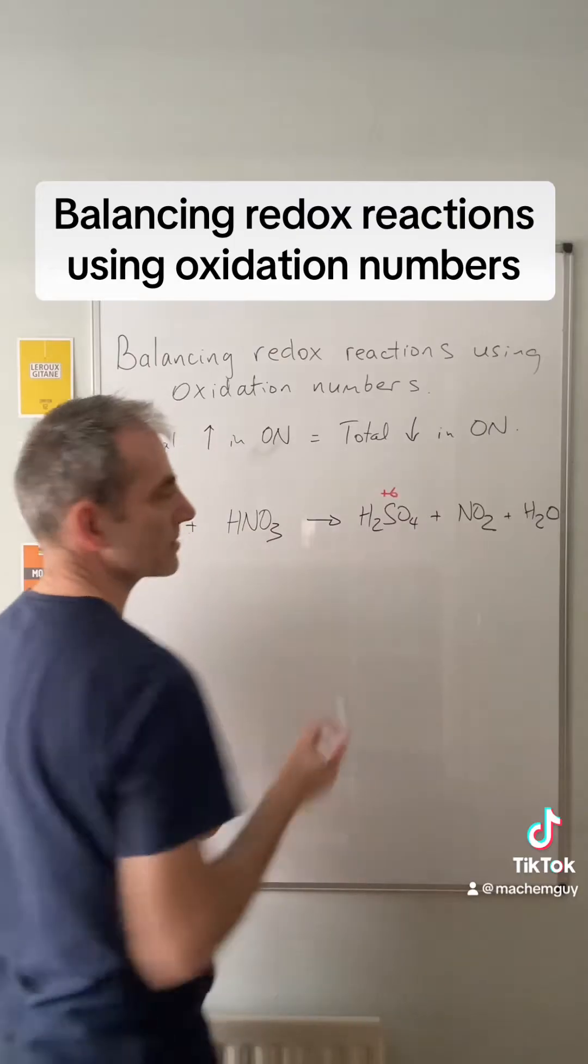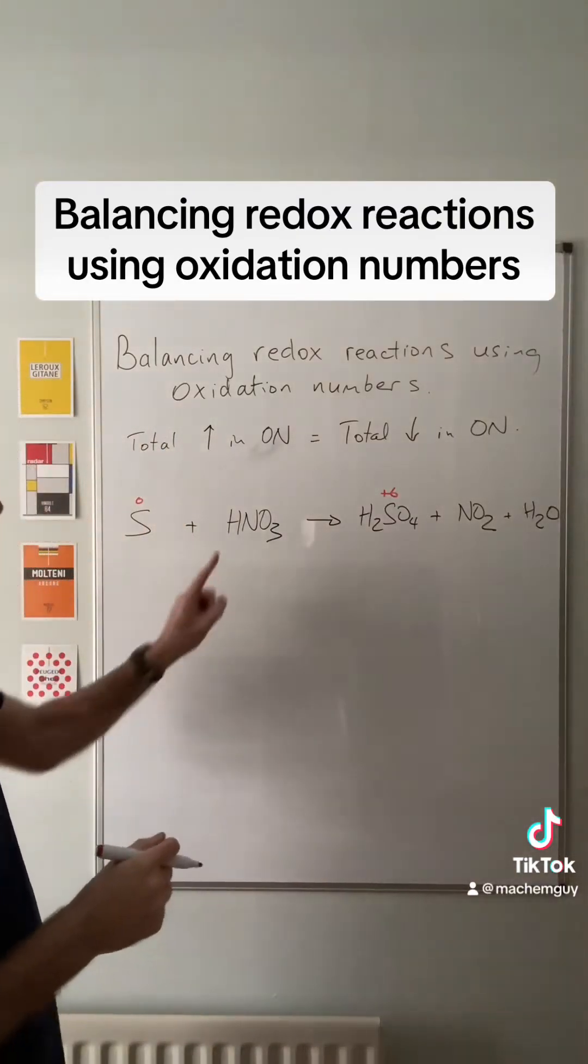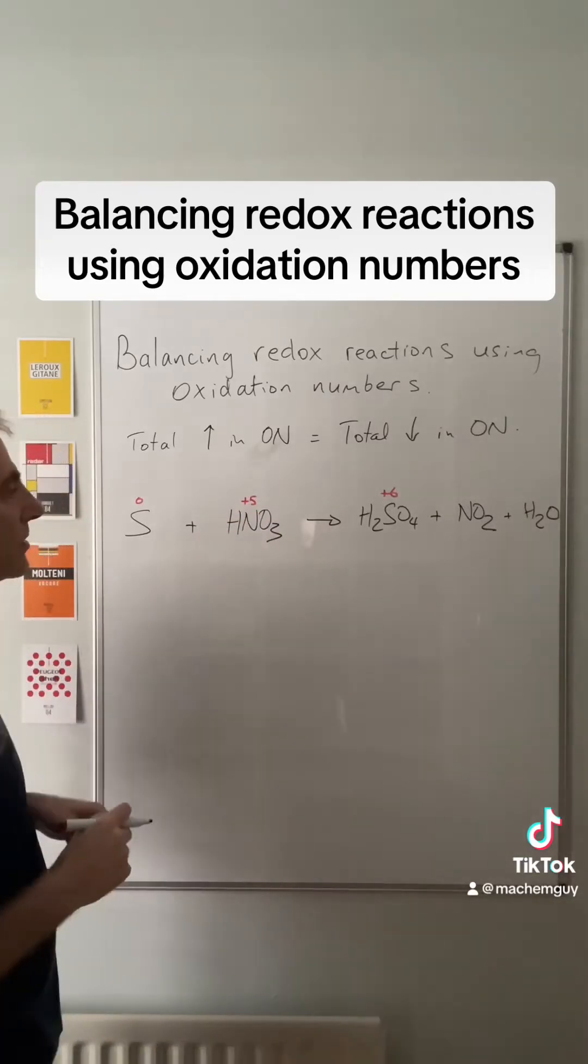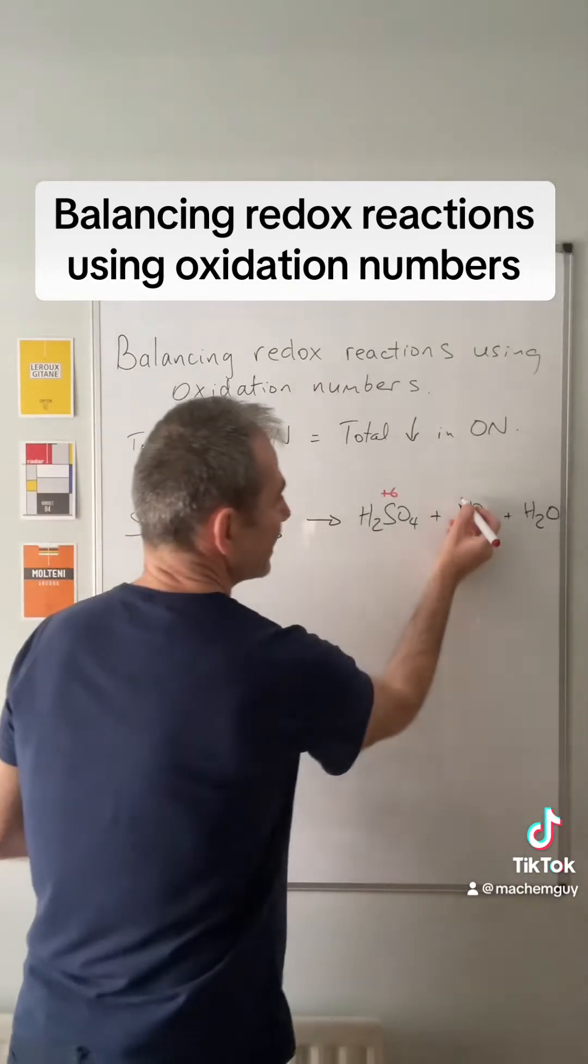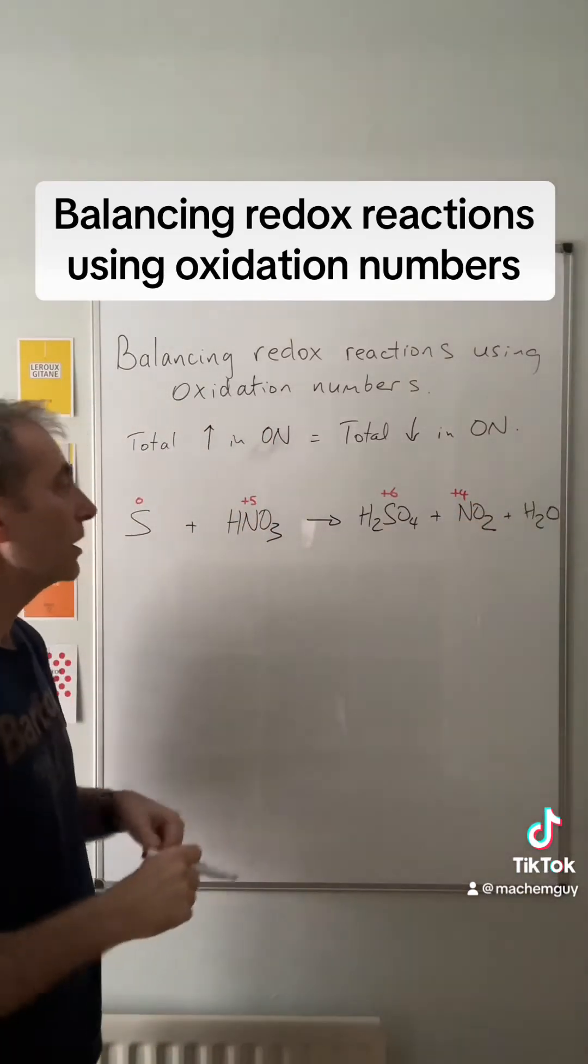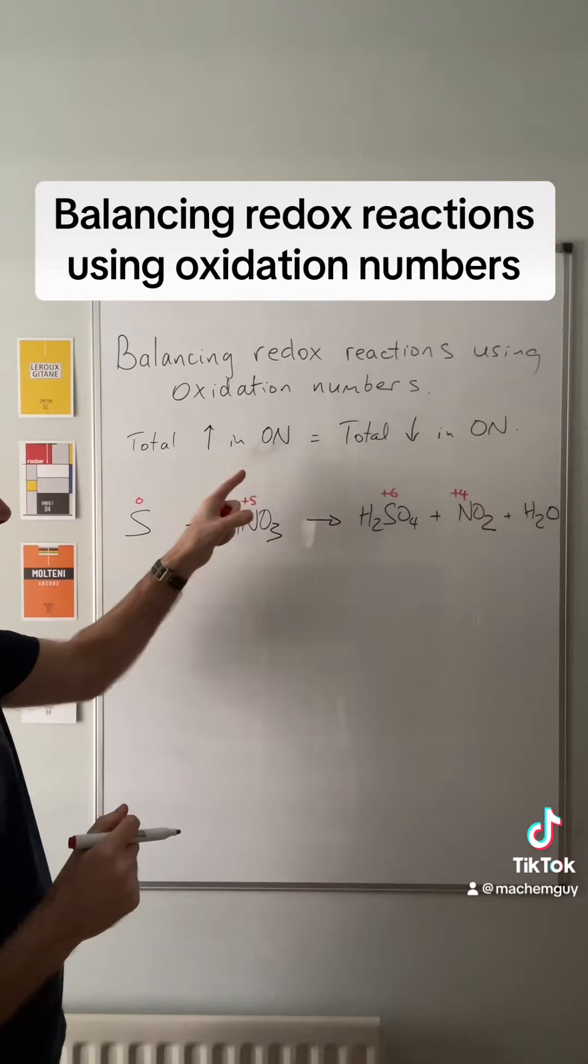So there's an increase of six for the sulfur. Nitrogen starts out in its plus five oxidation number and it goes down to plus four, so that's just a change of one.